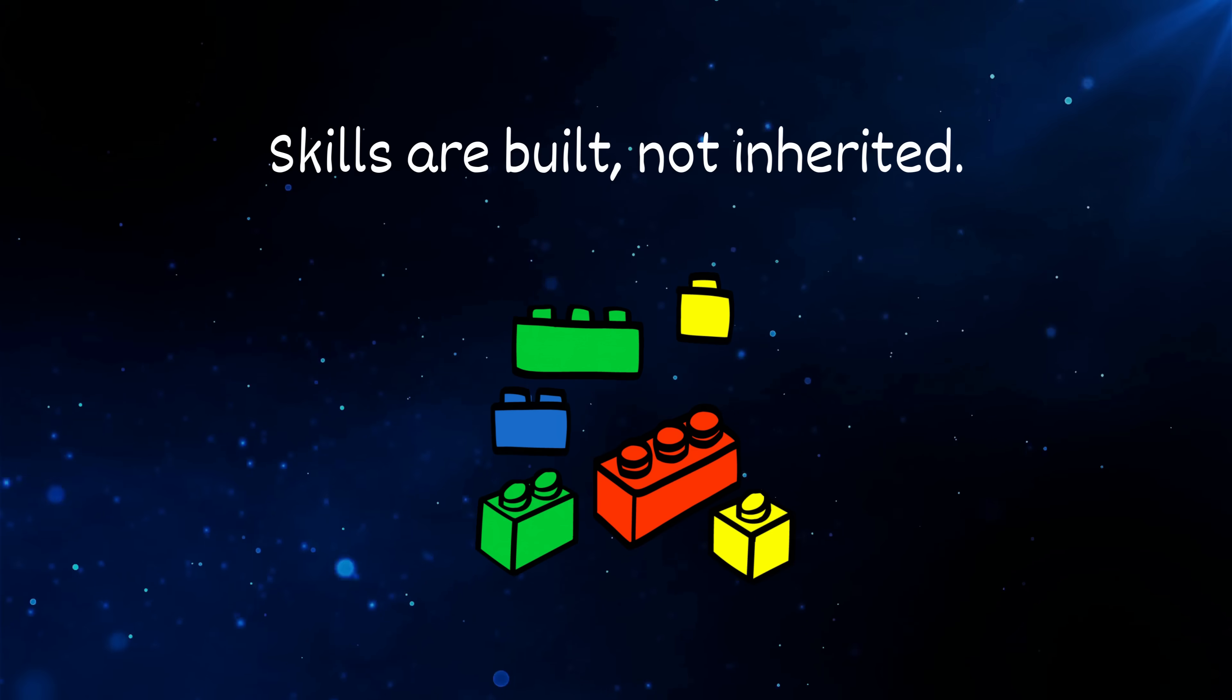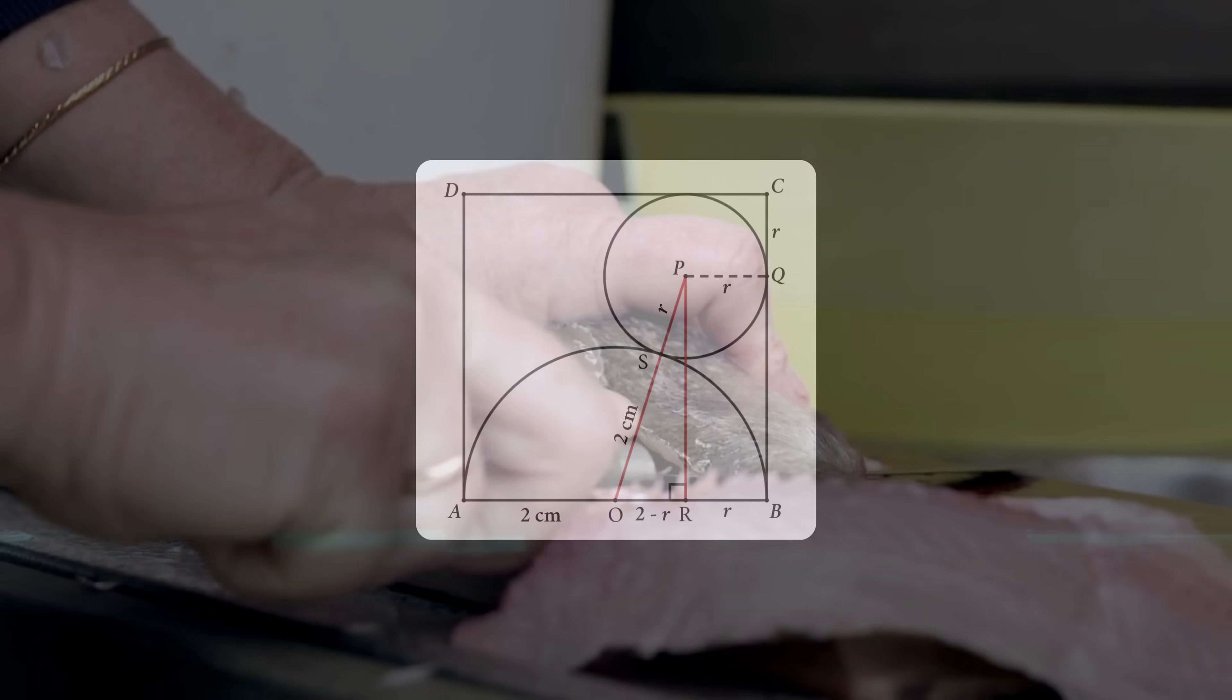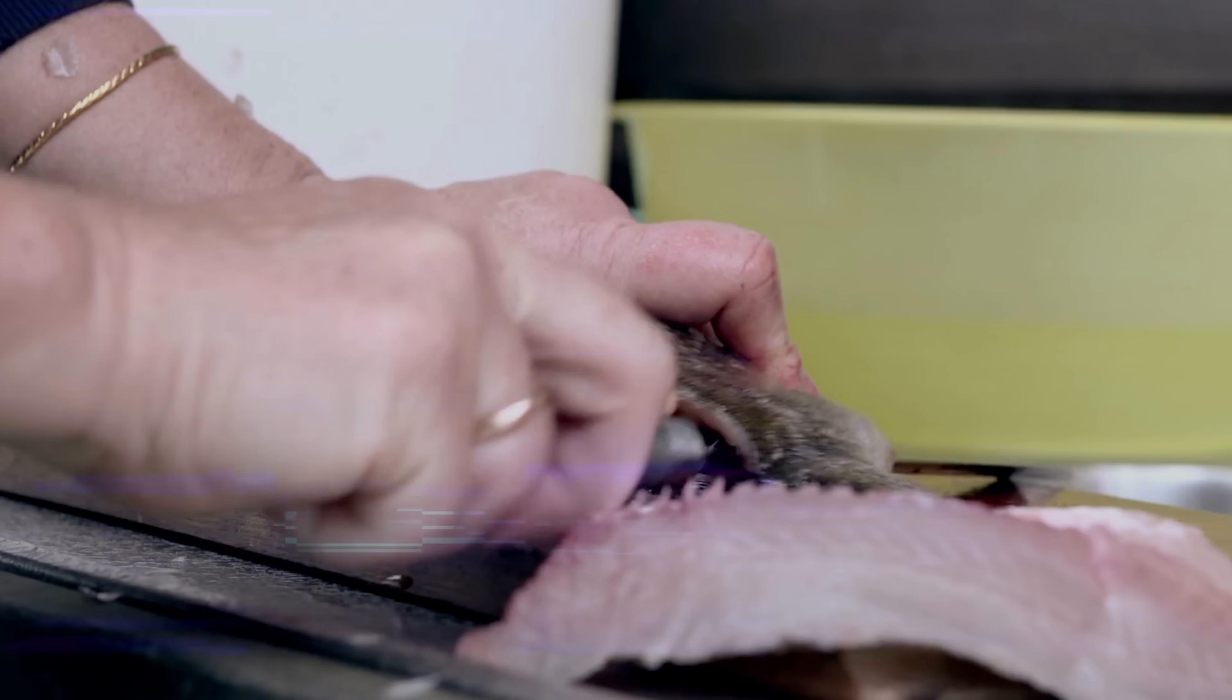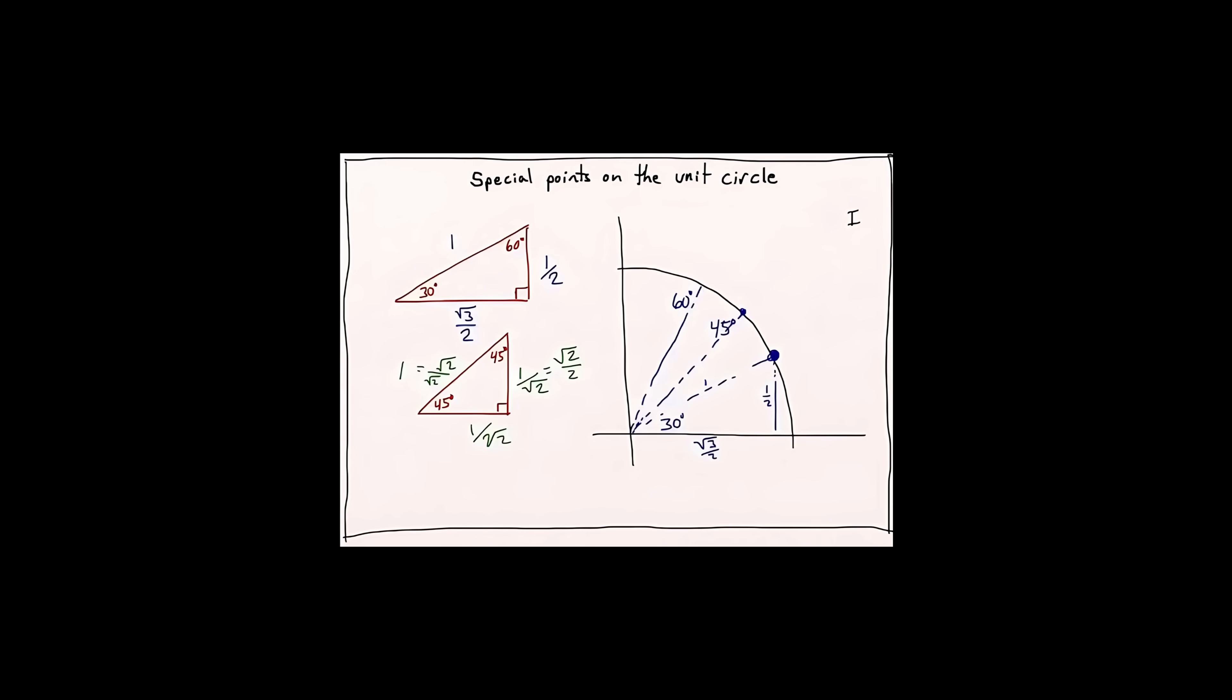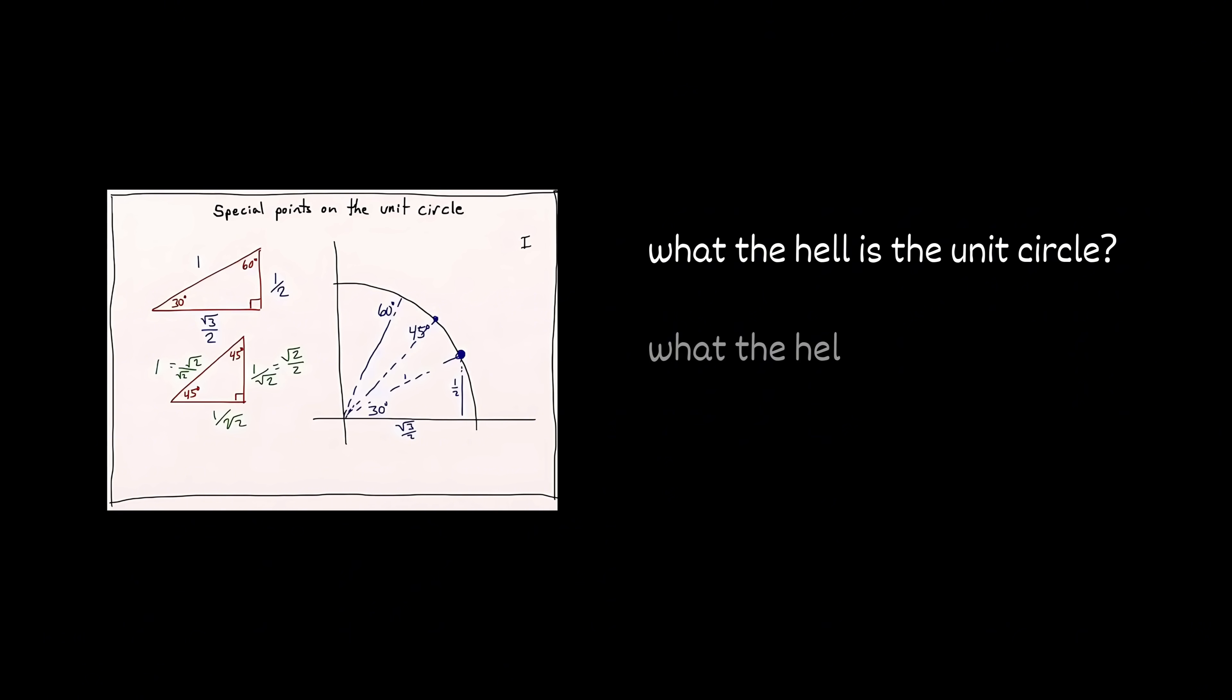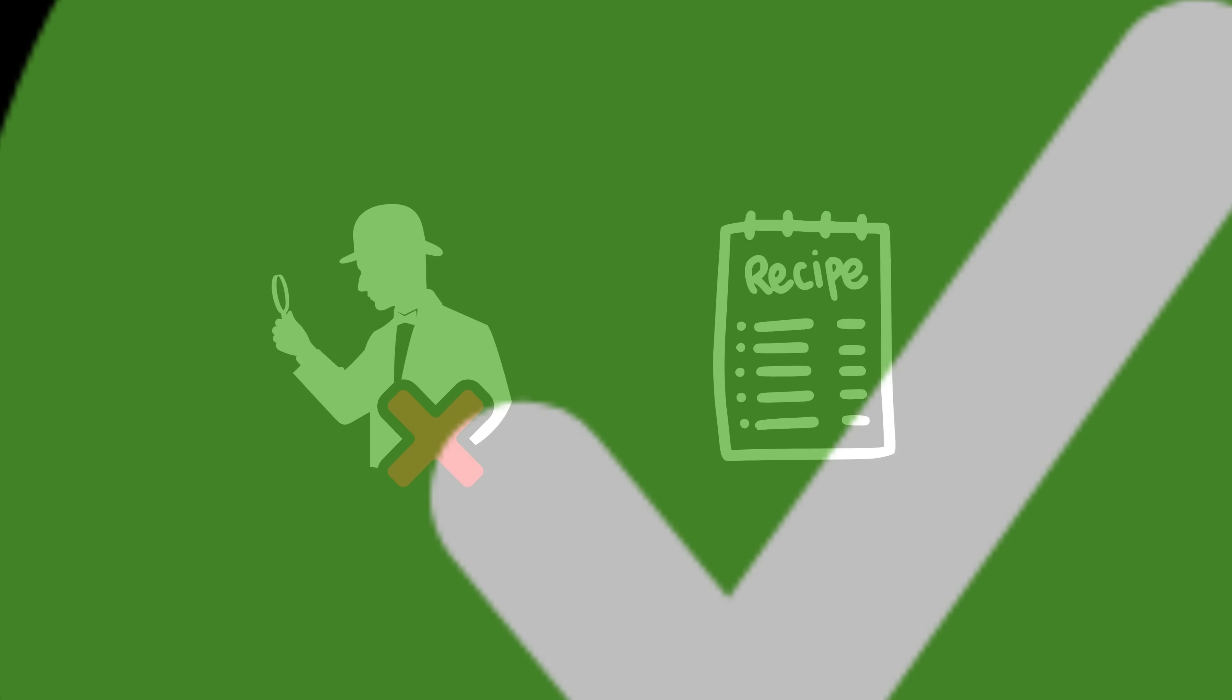Take that big scary problem and chop it into smaller chunks like you're Gordon Ramsay filleting a confused fish. If it's geometry with a unit circle, break it into: what the hell is the unit circle? What the hell are radians? And why is this even on my test? You're not solving a mystery, you're following a recipe.